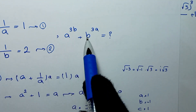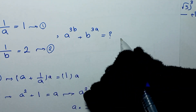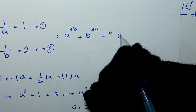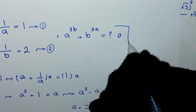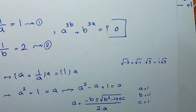So for both a₁ and a₂, our expression a to the power of 3b plus b to the power of 3a is equal to zero. This is our final answer. Thank you for watching, don't forget to like and subscribe, and see you in the next video. Goodbye!